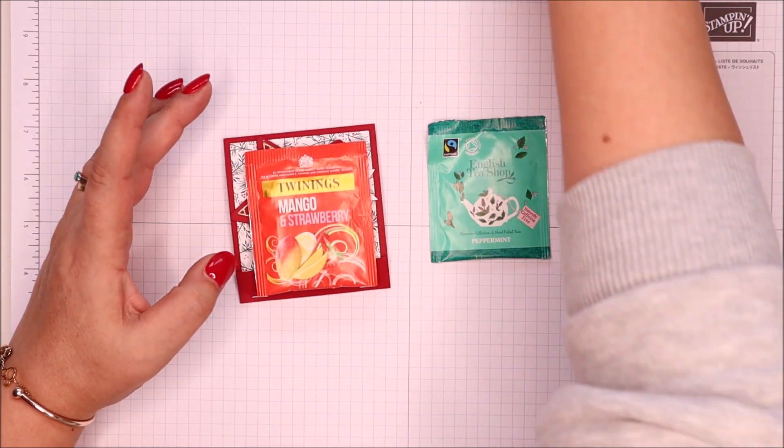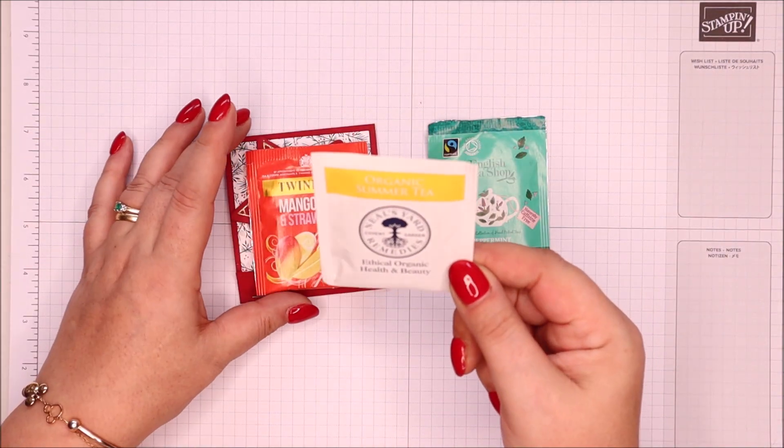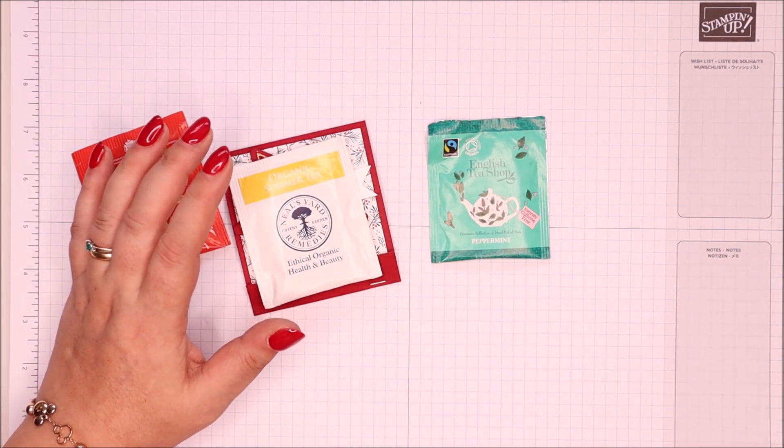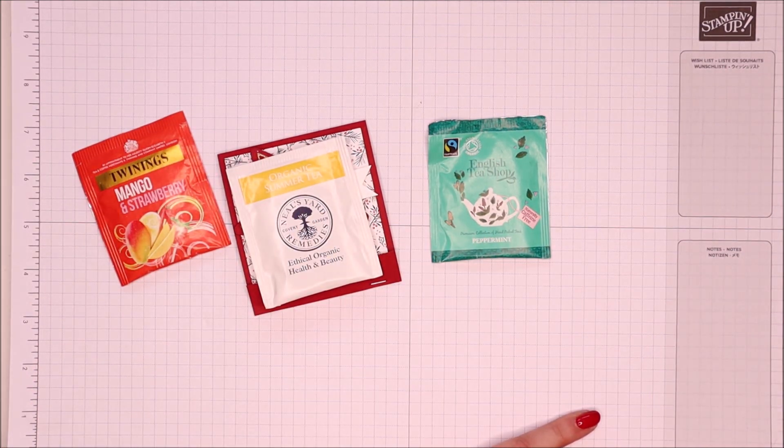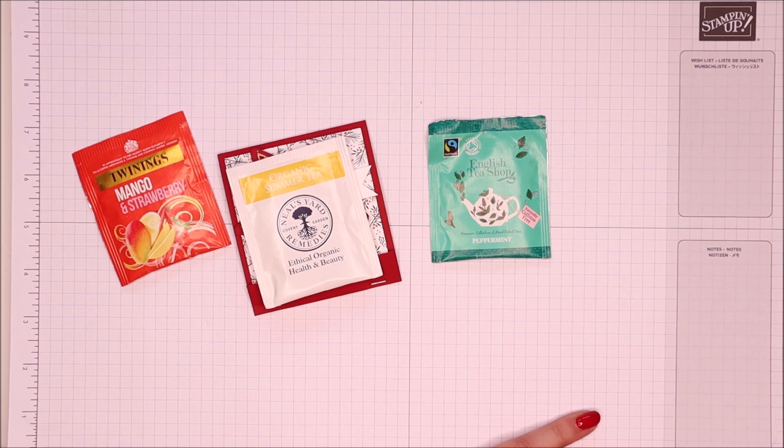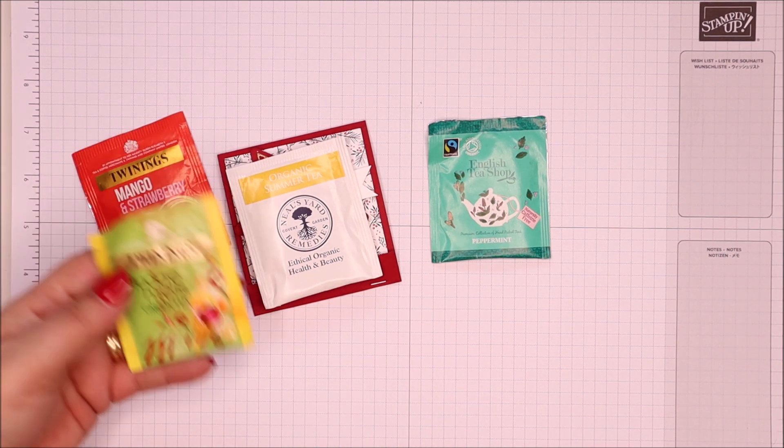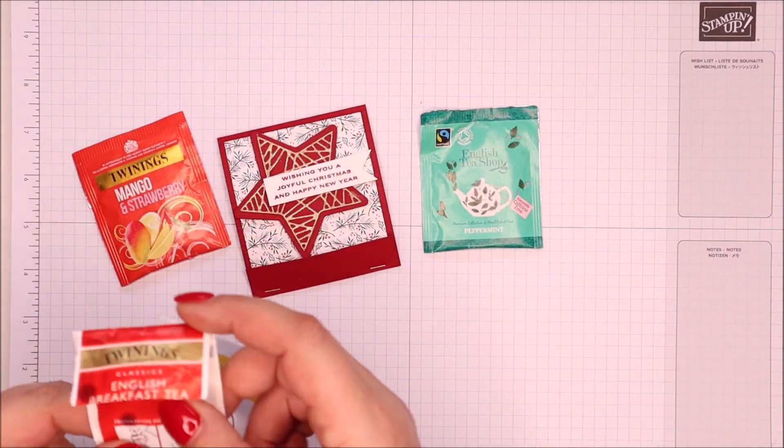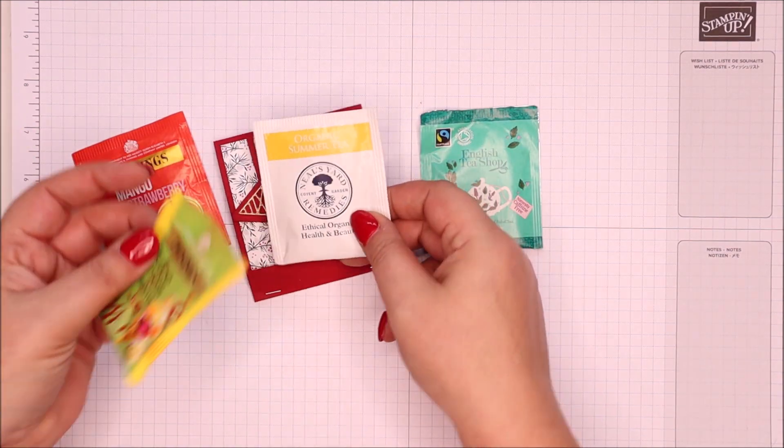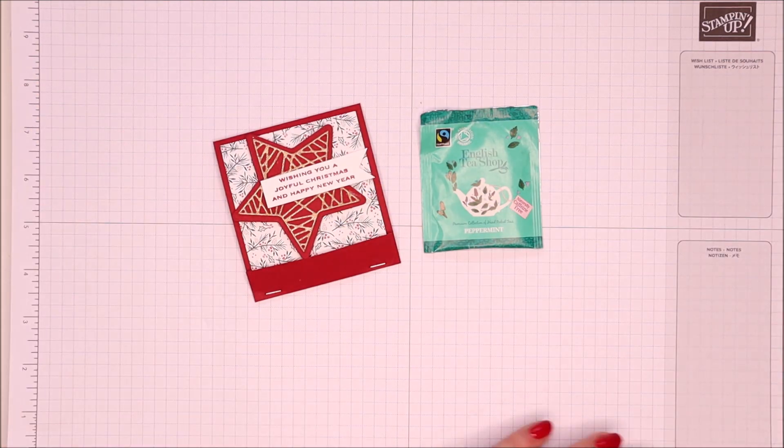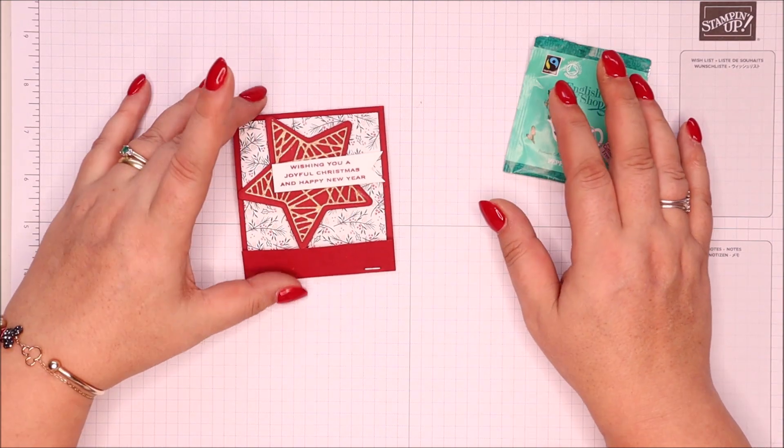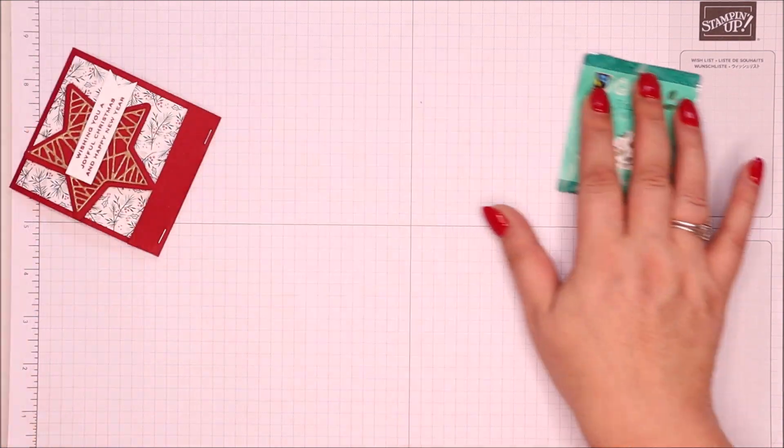Twinings will also fit this project as will Neil's Yard Organic Summer Tea. That will fit. I think that's all the different varieties of teabags I've got. That's another Twinings one. That's a little bit smaller. That probably needs to go in the bin. But you get the point. Individually wrapped teabags will fit in this project and it's a little matchbook. So I wanted to show you how to make it.